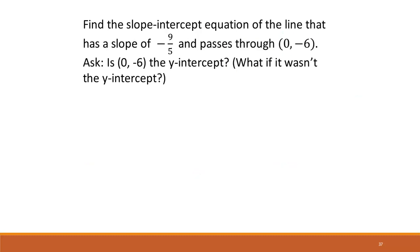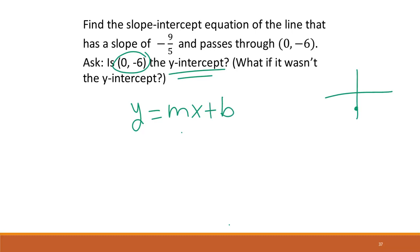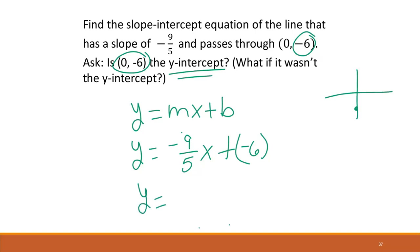Find the slope-intercept equation of the line with a slope of negative 9 fifths that passes through the point 0, negative 6. Since the x-coordinate is 0, we know this is our y-intercept. We simply write y equals mx plus b: the slope is negative 9 fifths, so we have negative 9 fifths x, plus b where b is the y value, negative 6. That gives us y equals negative 9 fifths x minus 6.